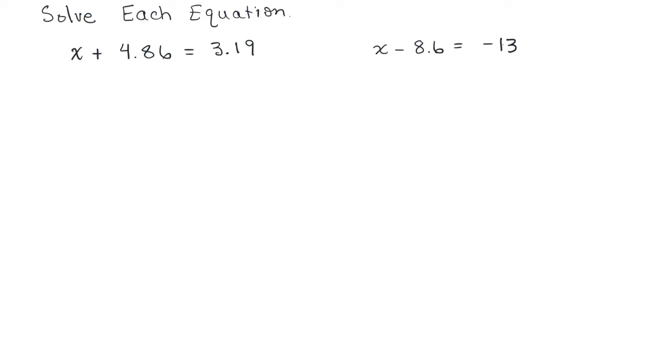All right, we're going to solve these two linear equations. Both of them have decimals. All right, let's do the first one. X plus 4.86 equals 3.19.